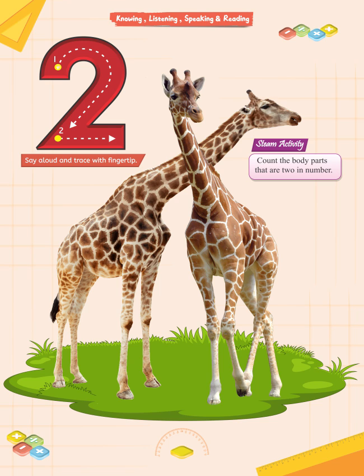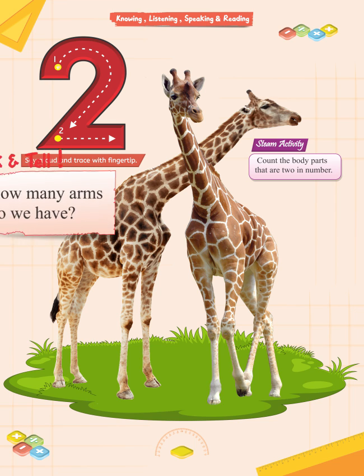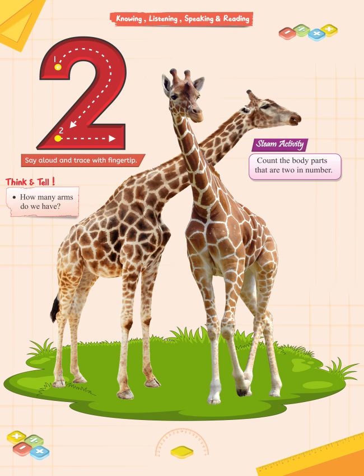We have two eyes, two ears, two lips, two hands, two arms, two legs, and two feet. We have many body parts that are two in number. Think and tell — how many arms do you have? You have a right arm and a left arm, so you have two arms.